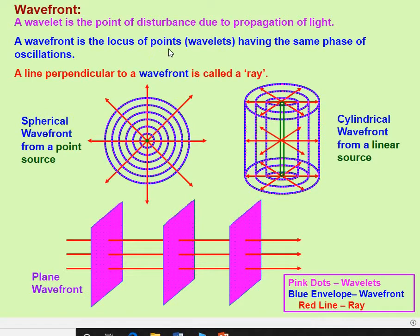A wavefront is the locus of all points which are in the same phase of oscillation. A line perpendicular to a wavefront is called a ray — the red lines represent rays. The blue envelope represents the wavefront.